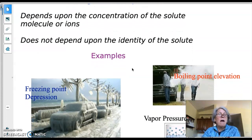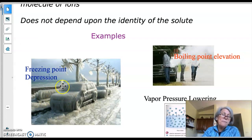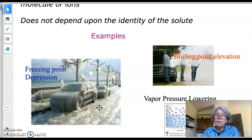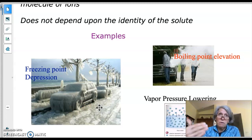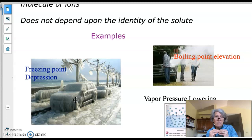Examples of colligative properties include freezing point depression. Living in Minnesota, we know that putting salt on ice makes it melt. The salt gets in the way of the hydrogen bonding happening in the ice, causing it to melt — something you also observed in the gizmo activity.